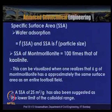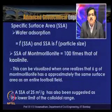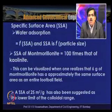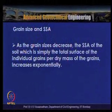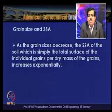This can be visualised by realising that 6 grams of montmorillonite has a surface area approximately equal to an entire football field. A specific surface area of 25 m²/g has been suggested as the lower limit for the colloidal range. As grain size decreases, the SSA — the total surface of individual grains per dry mass — increases exponentially.